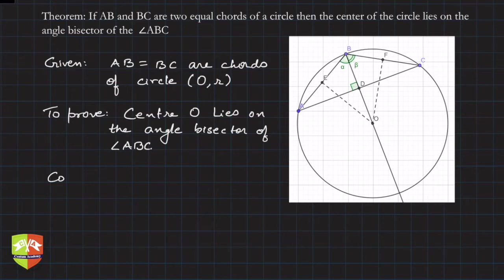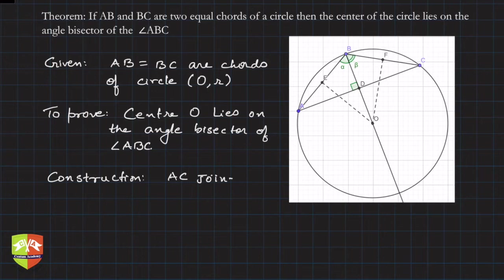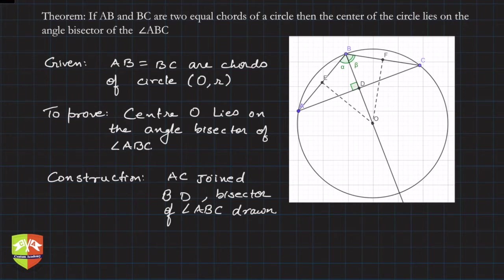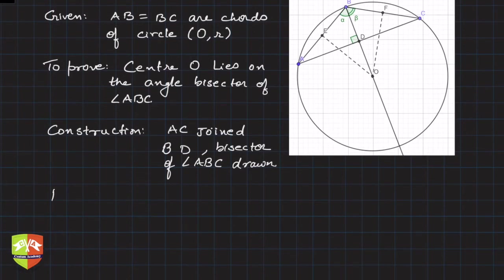For the construction, we join AC and draw BD — the bisector of angle ABC. Sorry, I said AD earlier — it should be BD. BD is the bisector of angle ABC drawn. Now let's move to the proof.